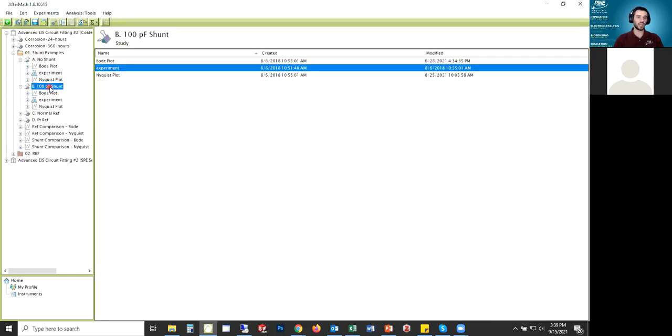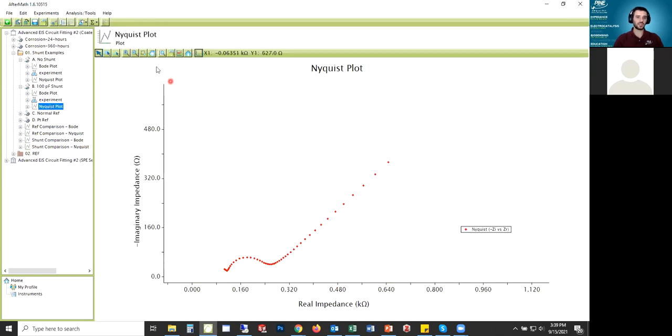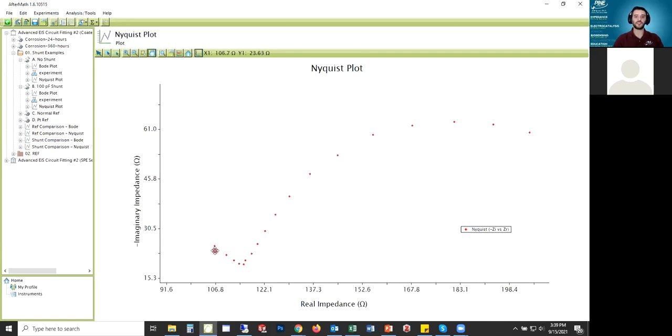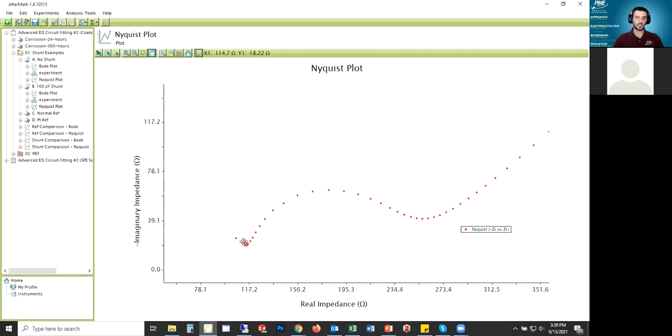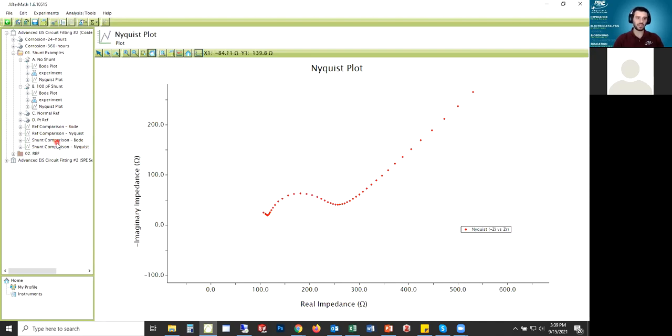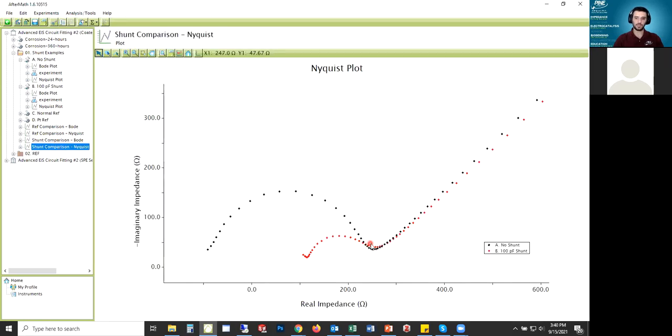What I did was apply a 100 picofarad shunt. The interesting thing is that there's still a few points here at high frequency that are a little bit of error, some kind of artifact. But overall, you can see that the intercept is now in positive z-real territory. The semicircle has shrunk a little. I've effectively gotten rid of that high frequency error.